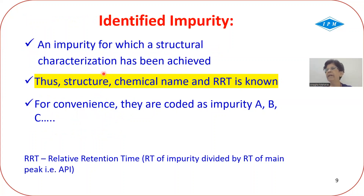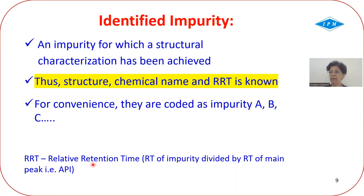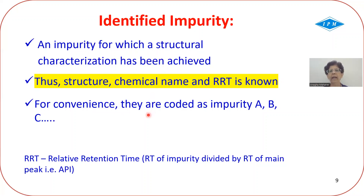The next term is identified impurity. 'Identified' means you know the structure — you have achieved structural characterization, you can draw the structure, you know the name, and you also know the relative retention time. When you inject the impurity standard, the peak comes at a specific retention time; dividing that by the API retention time gives the relative retention time, which remains fixed with slight variation. In monographs, these impurities are coded as A, B, C, D, and so on.